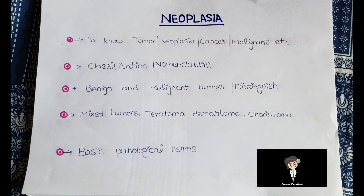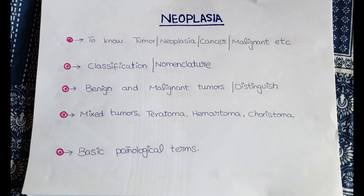We will also understand the nomenclature of these terms — why and how we name them — along with basic classification of neoplasia. We will discuss differences between malignant and benign tumors, along with some basic terms like mixed tumors, teratomas, hamartomas, and choristoma.